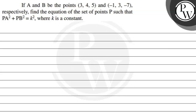Hello, let's see the question. The question says: if A and B be the points (3, 4, 5) and (-1, 3, -7) respectively, find the equation of the set of points P such that PA² + PB² = k², where k is a constant.